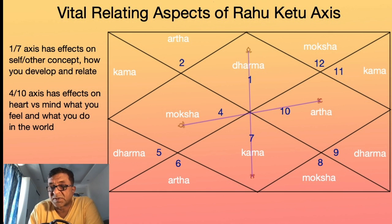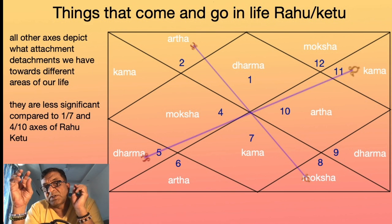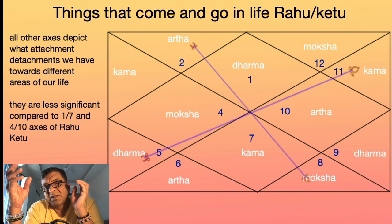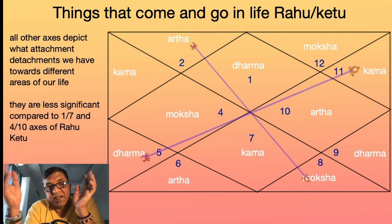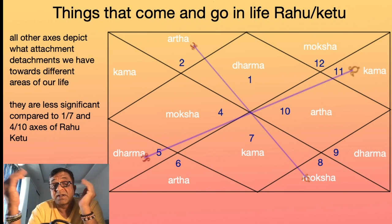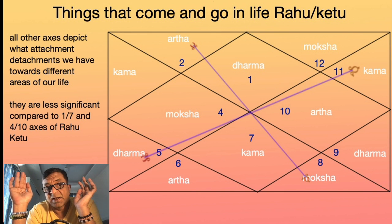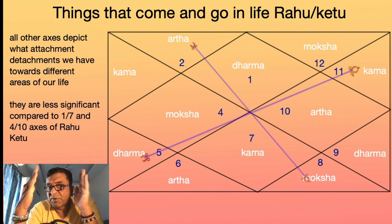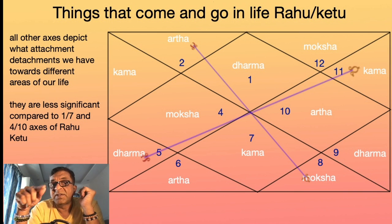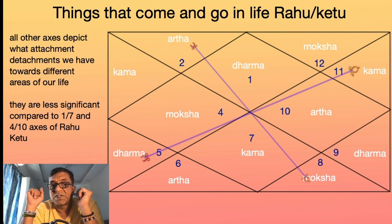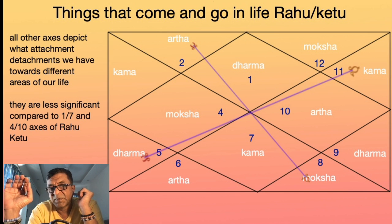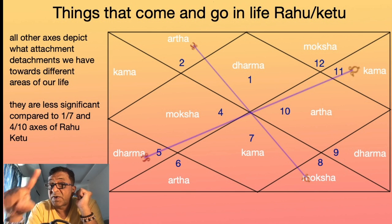What about the rest of the houses? The rest are called Trikona or Kona in Sanskrit — these are things that come and go in your life: 2nd, 3rd, 5th, 6th, 8th, 9th, 11th, 12th houses. These are things added to or subtracted from us, but they are not us. The 1, 4, 7, and 10 is us. All other axes depict what attachments and detachments we have towards different areas of life. They are less significant in terms of Rahu-Ketu when compared to the 1-7 and 4-10 axes.